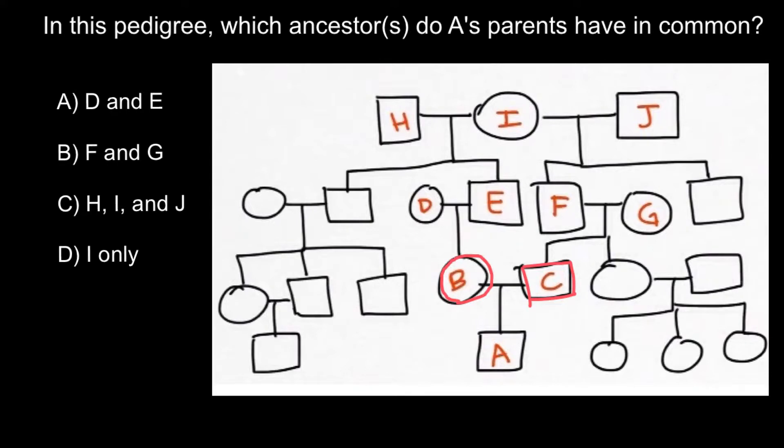Let's now ask who is going to be an ancestor of individual B. Here is the first generation, second generation, third generation, and four generations we have here. So these are going to be the grandparents of individual B.